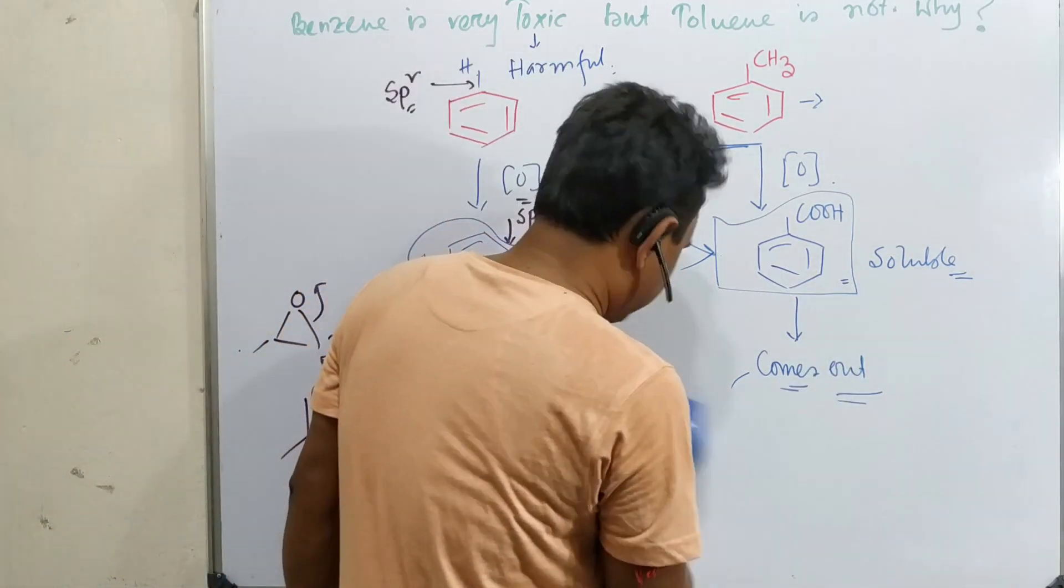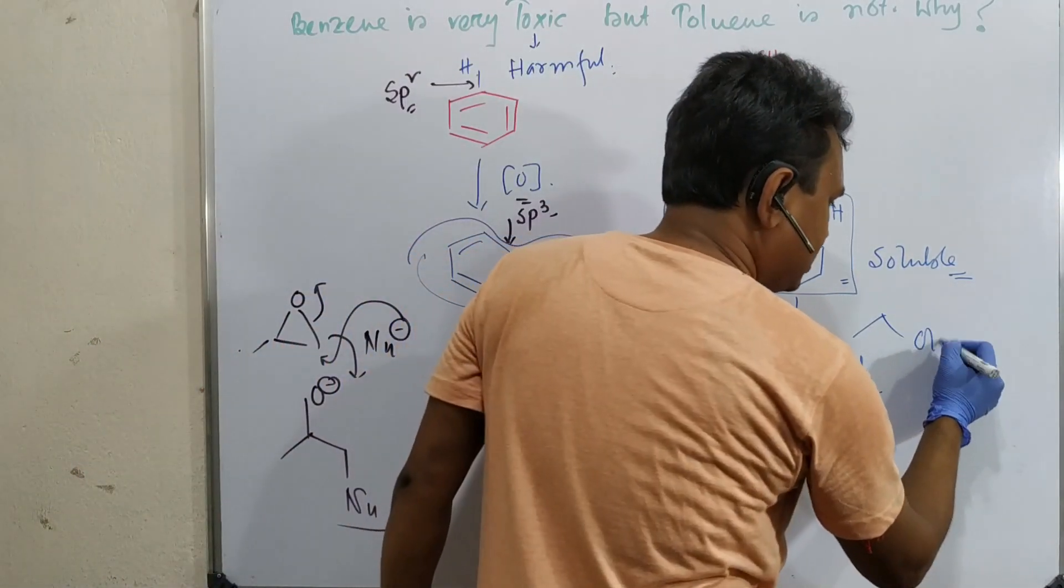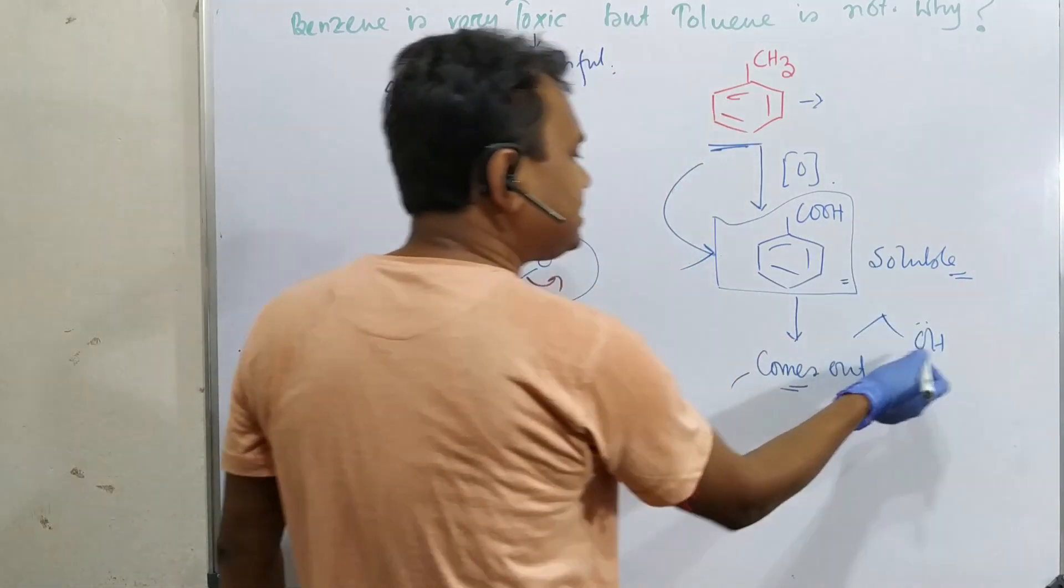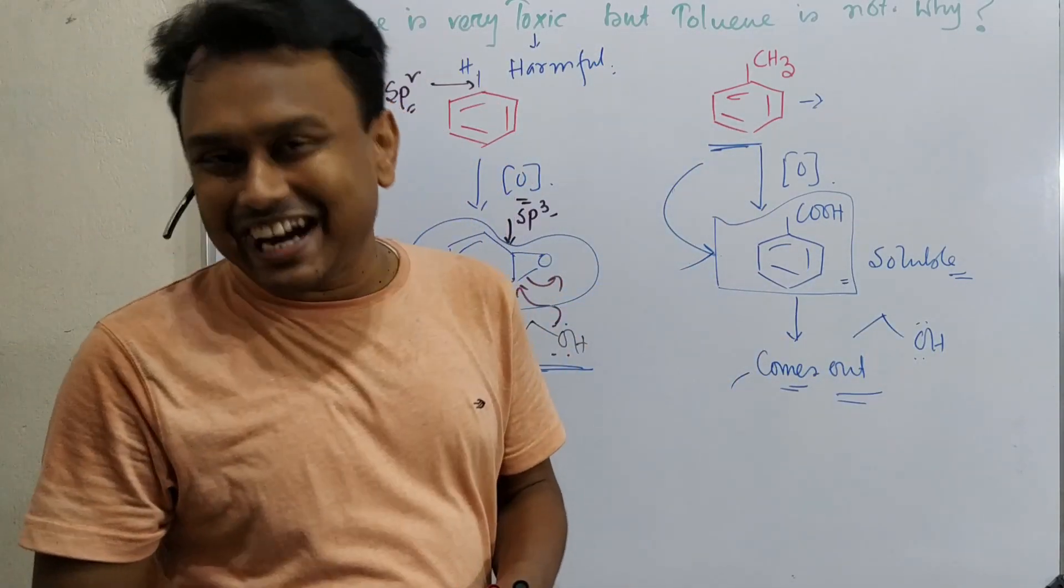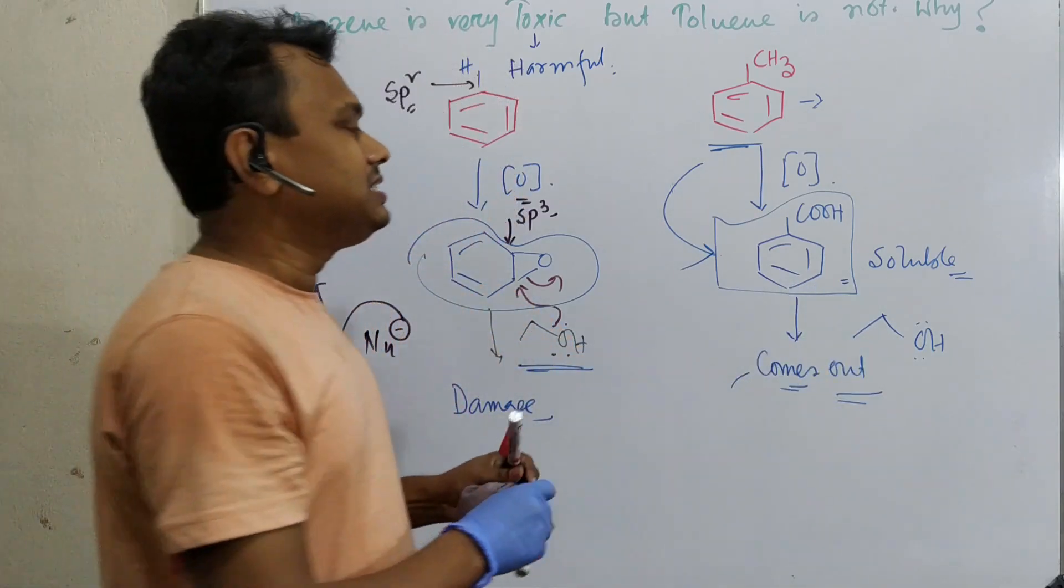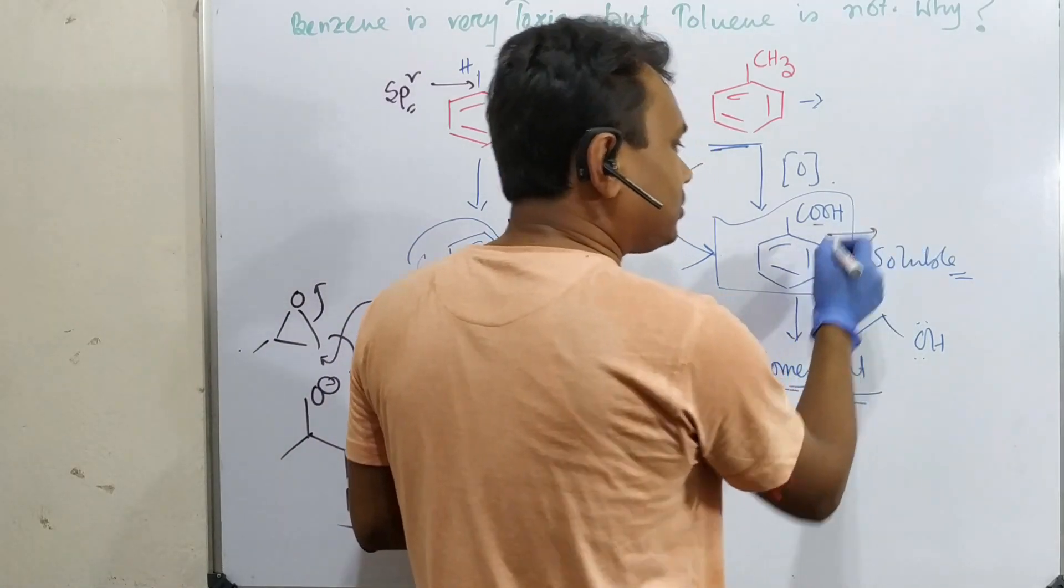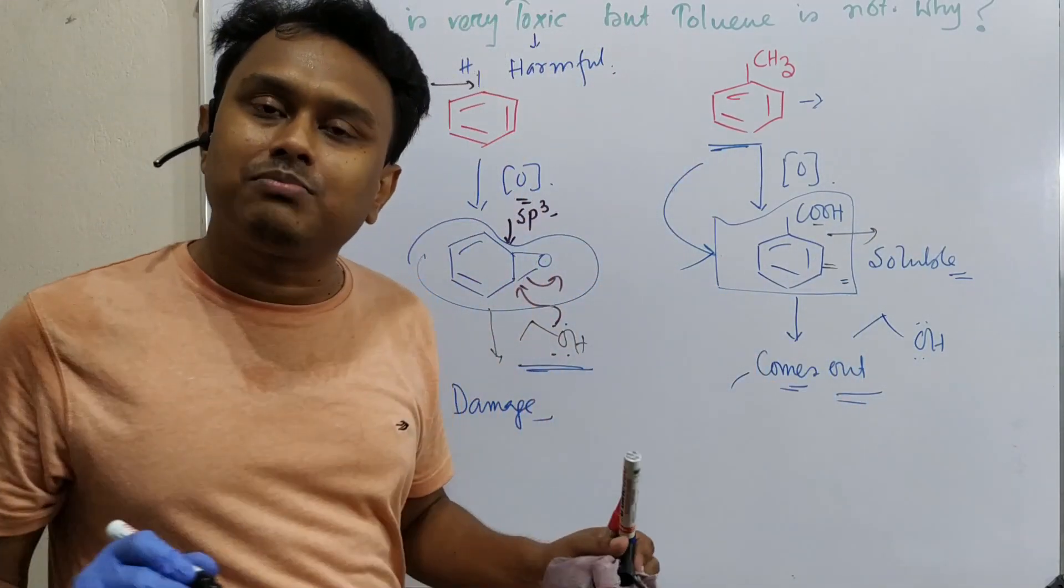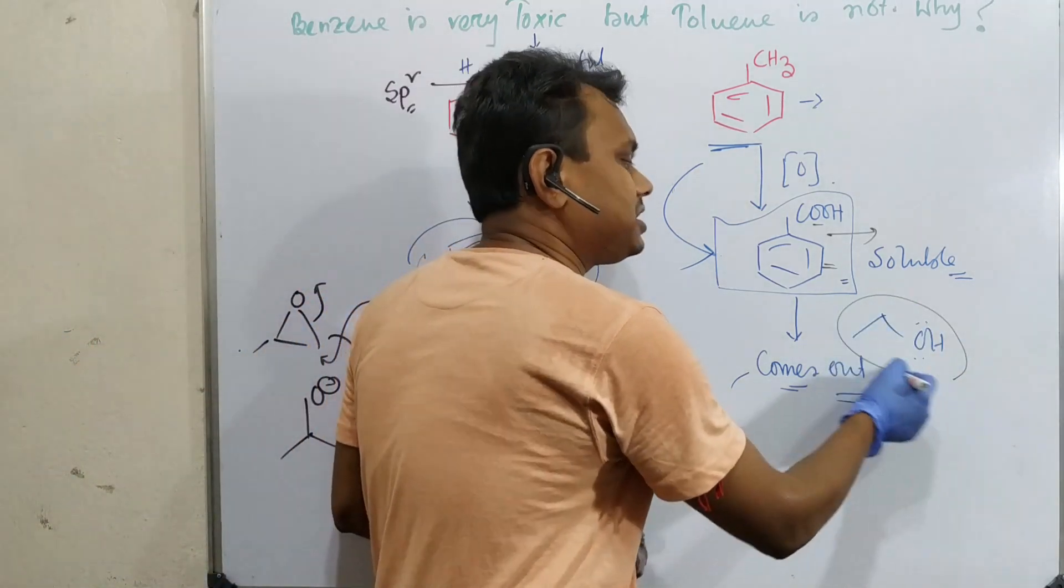One question you may think: if this is OH, can this also react? Acid plus alcohol produces ester. But ester formation is not that easy, so that's why it doesn't occur. Second thing, this is a very stable molecule and not that acidic. Benzoic acid is not that highly acidic like acetic acid, so this reaction doesn't occur efficiently under the reaction media.